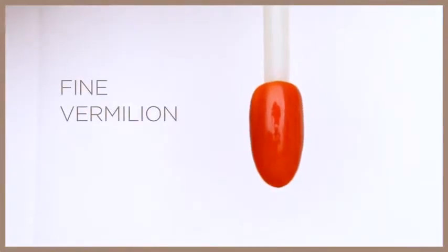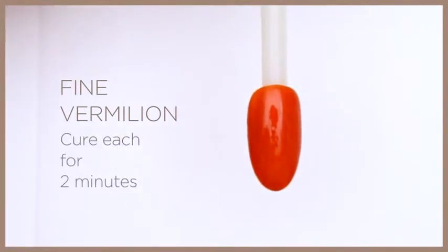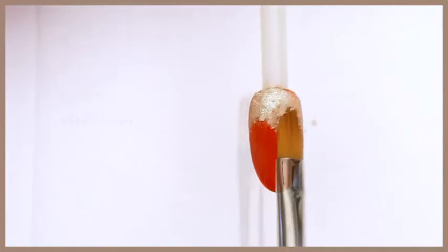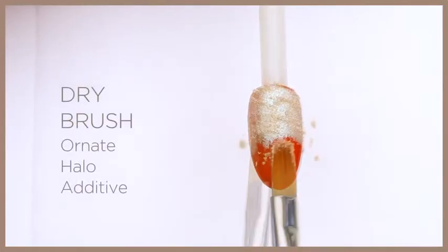Apply two thin layers of Fine Vermilion and cure each for two minutes. Burnish the nail with Ornate Halo additive.